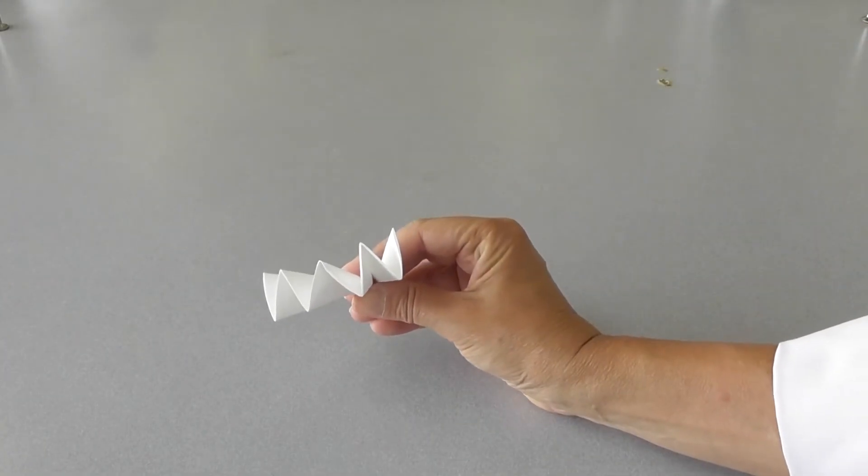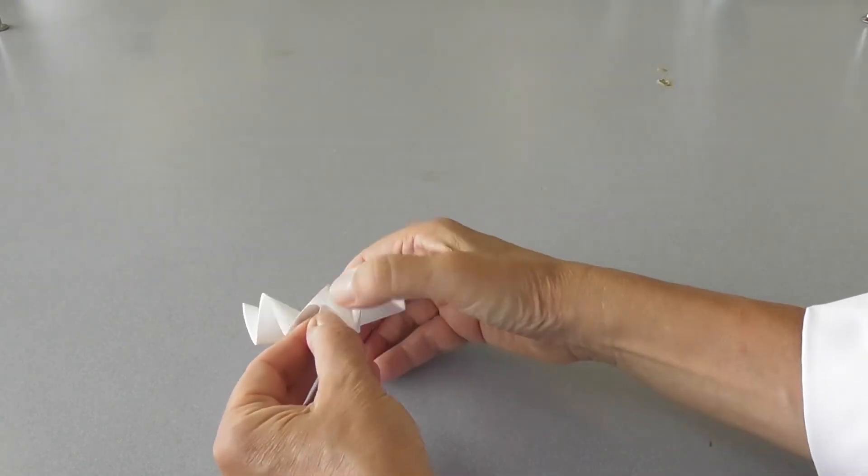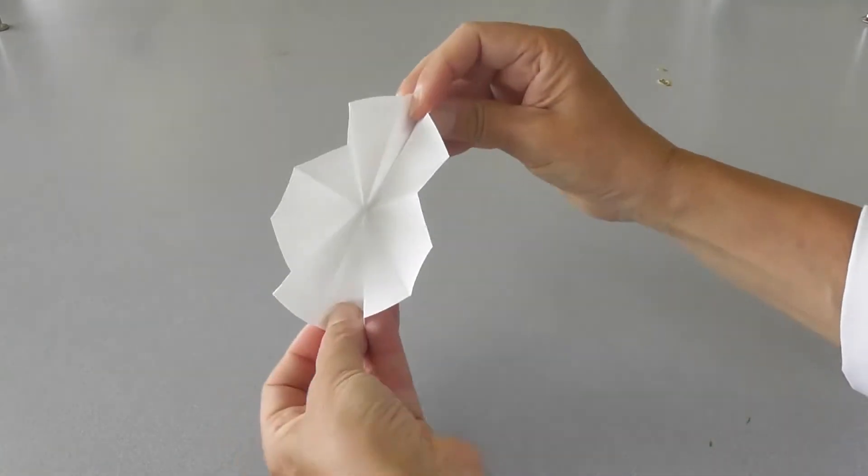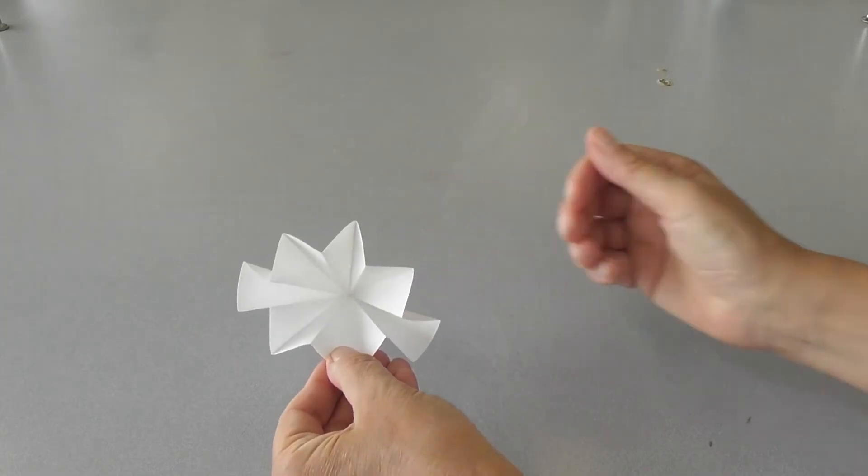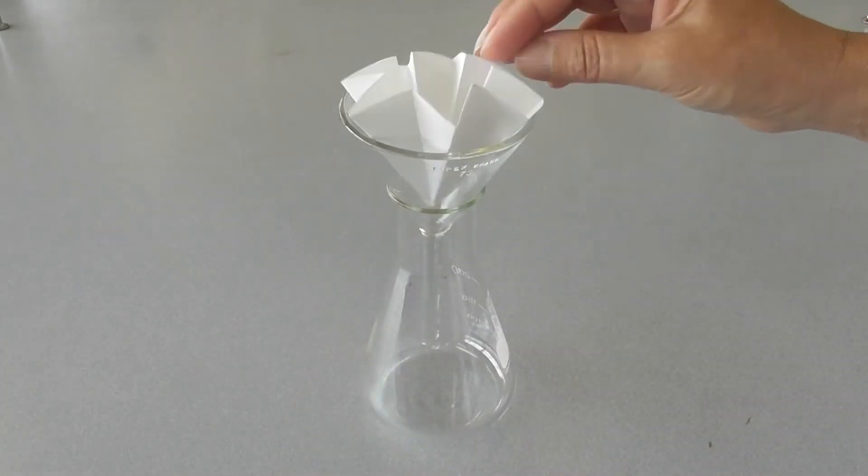If using fluted filter paper, open the filter paper and place it into the funnel. The fit into the funnel does not have to be tight. Once liquid has been poured in, the filter paper will be held in place.